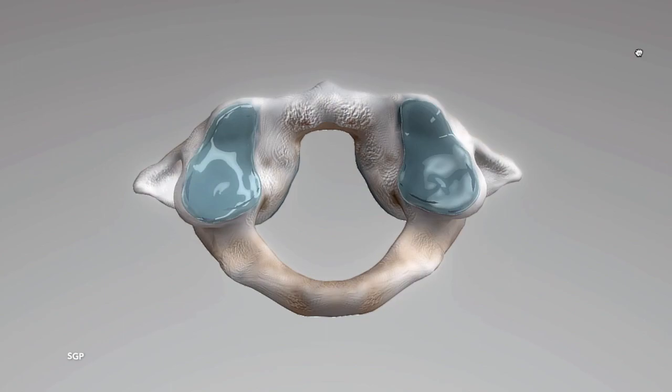The spinal canal of C1 is very peculiarly shaped due to the lack of the body and the presence of the odontoid process of axis. The anterior narrow part houses the odontoid process.